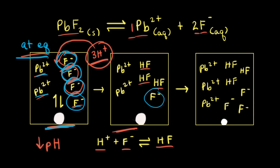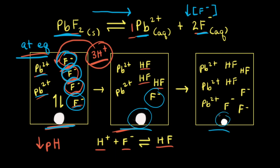The system was at equilibrium and the concentration of fluoride anions was decreased. According to Le Chatelier's principle, the system will shift in the direction that decreases the stress. So if the stress is a decreased concentration of fluoride anions, the system will shift to the right to make more fluoride anions. When the system shifts to the right, more lead(II) fluoride dissolves to increase the concentration of Pb²⁺ and F⁻. Comparing the second diagram to the third diagram, the amount of solid has gotten smaller and the concentration of Pb²⁺ and F⁻ in solution has increased.